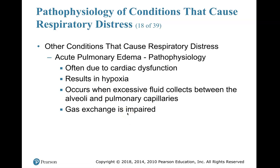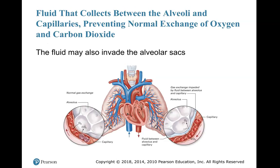Other conditions that cause respiratory distress. Acute pulmonary edema: pathophysiology — often due to cardiac dysfunction, results in hypoxia, occurs when excessive fluid collects between the alveoli and pulmonary capillaries, and gas exchange is impaired. Fluid that collects between the alveoli and the capillaries may also invade the alveolar sacs. Normal gas exchange is shown on the left, and on the right we see fluid between the alveoli and the capillary, which hinders that gas exchange.